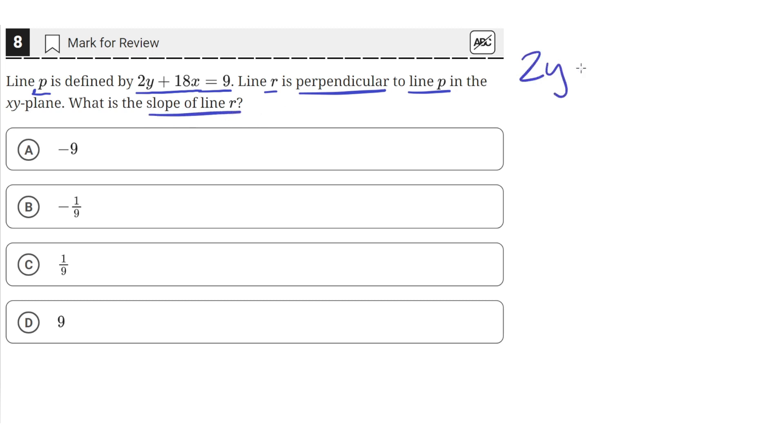So we have this line, line P, which is 2y plus 18x equals 9. Let's write this line in y equals mx plus b form.